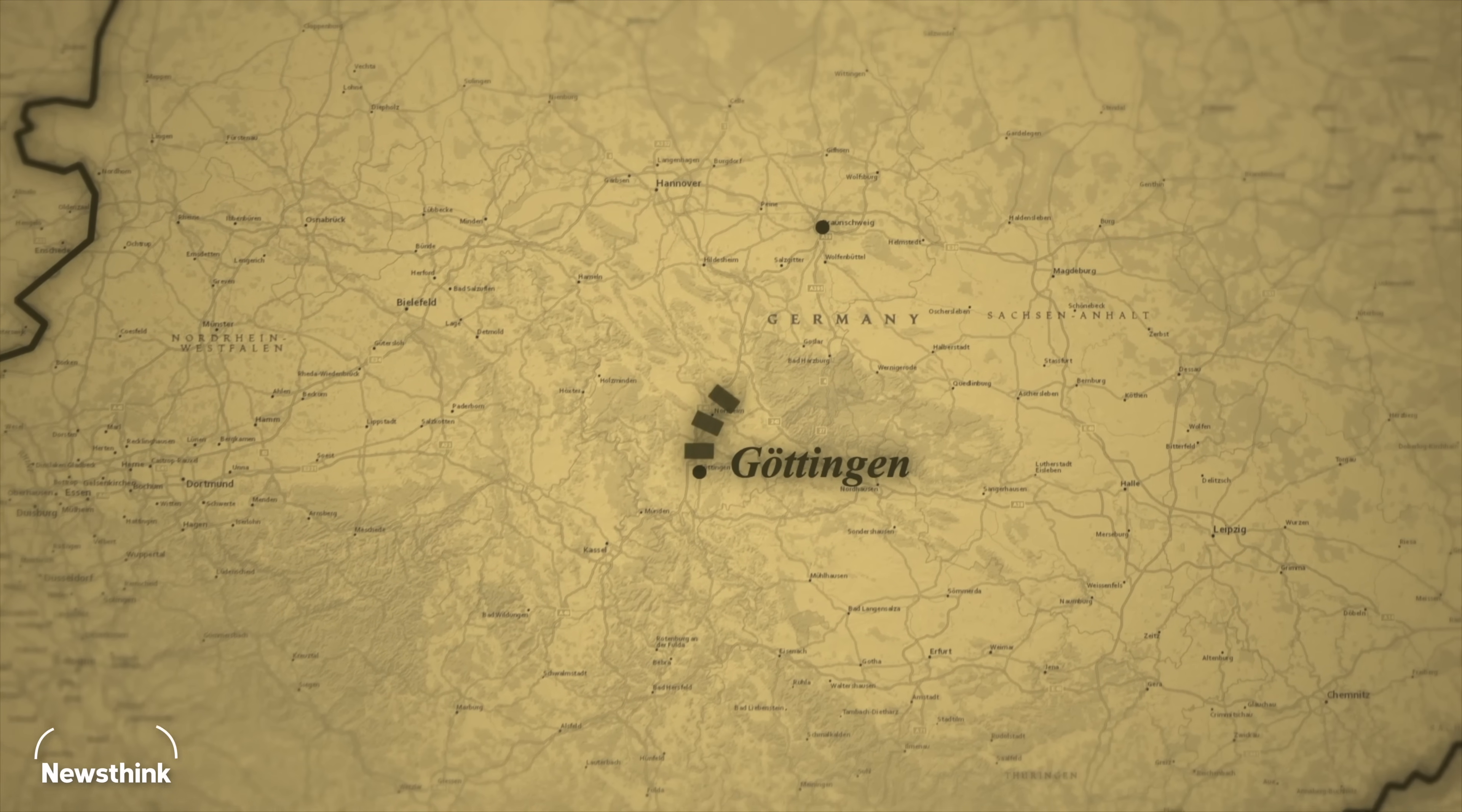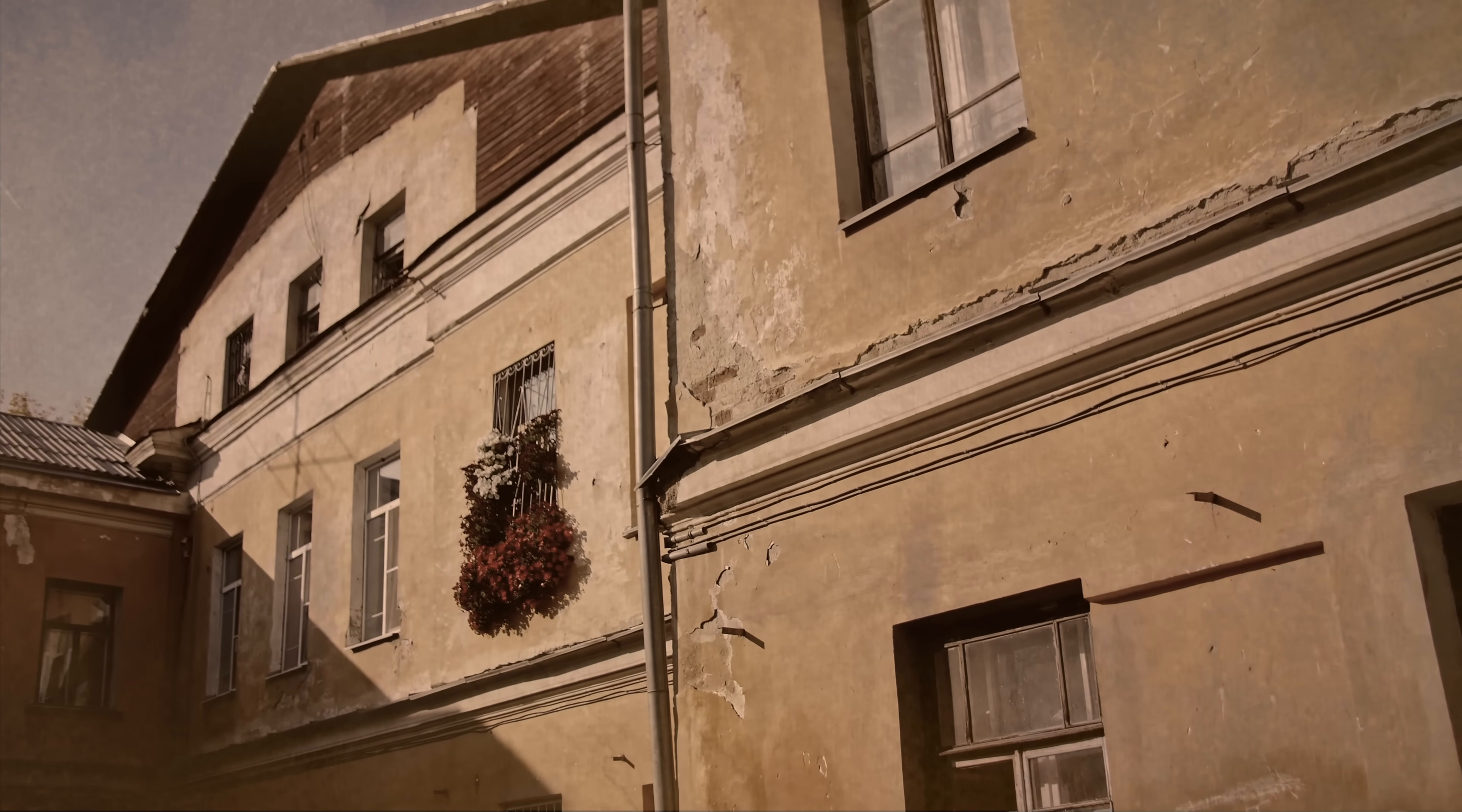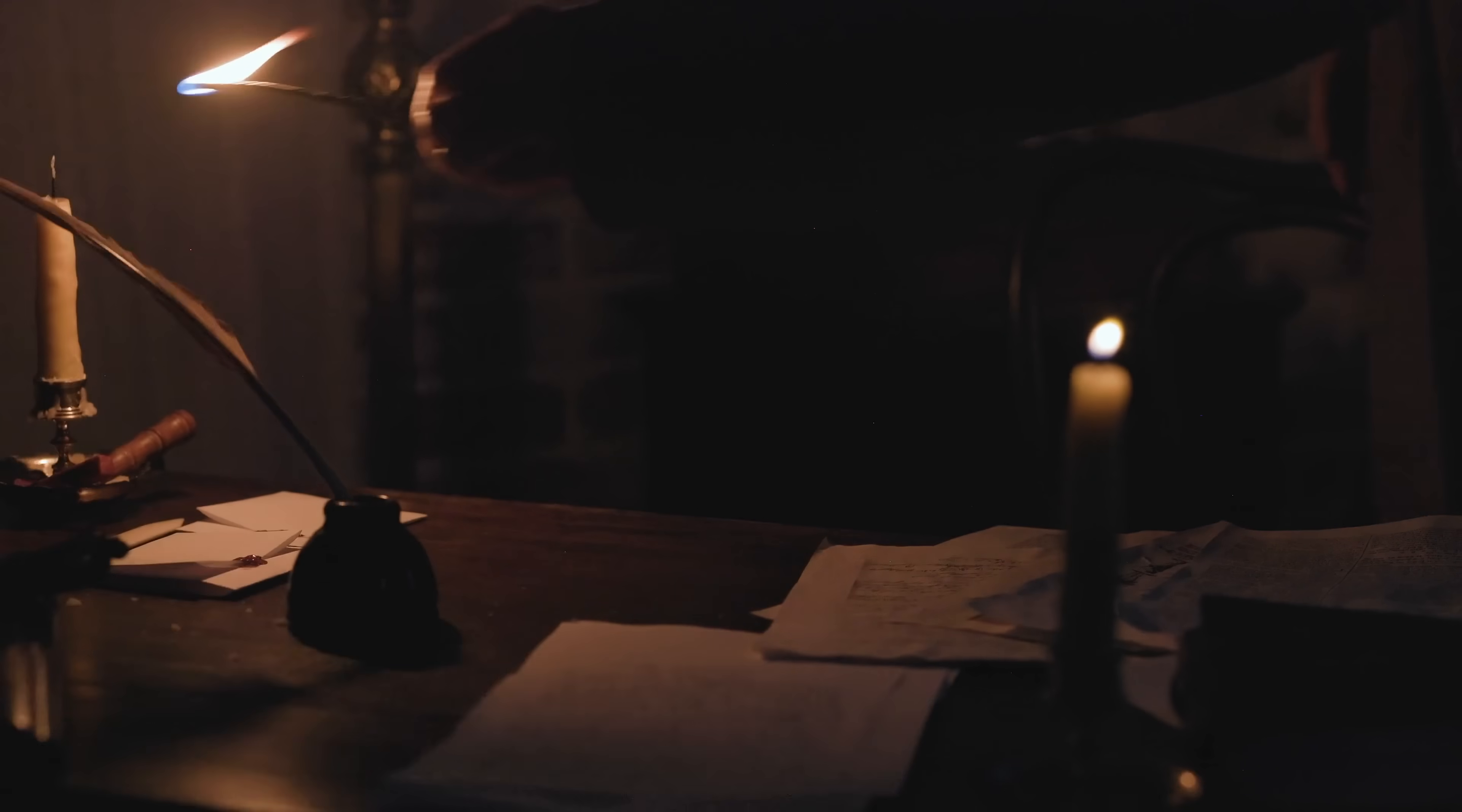In 1798, Carl returned to his hometown of Brunswick after concluding that the University of Göttingen had nothing more to teach him. Instead of living with his parents, he rented a room to work in peace. Carl's father saw no value in his theoretical pursuits and had hoped his son would earn a living through physical labor. Carl defended his work, arguing that his intellectual efforts lay the foundation for mathematics and science. Not understanding and tired of arguing with his son, Carl's father walked away. They never spoke or saw each other again.